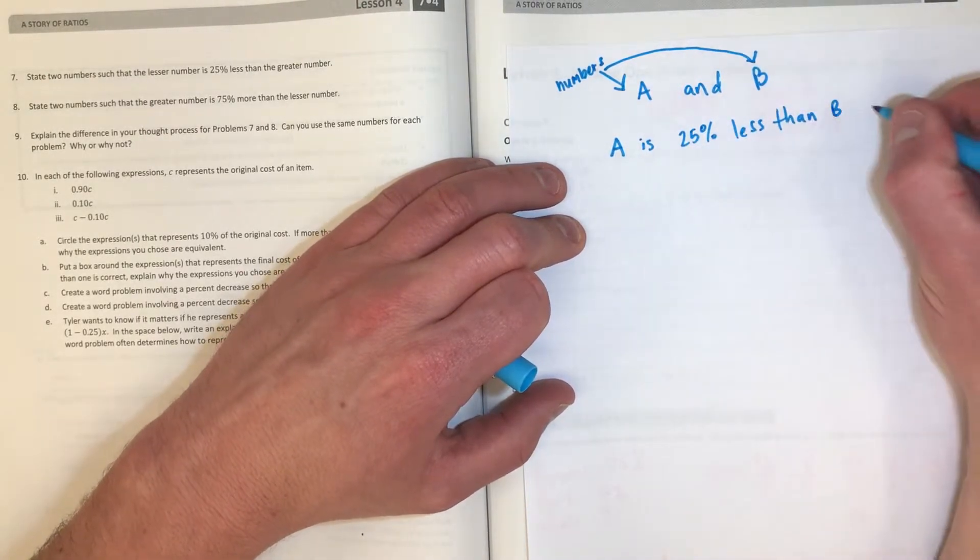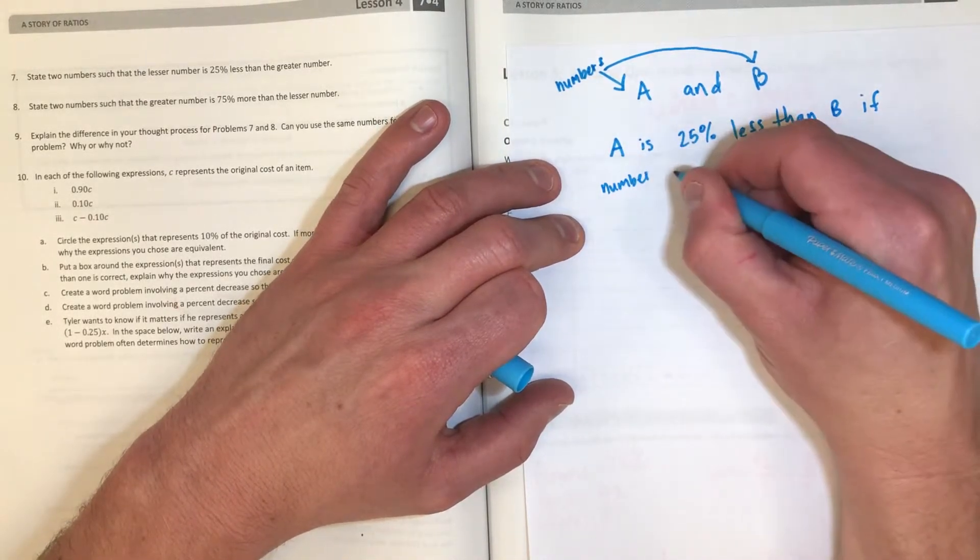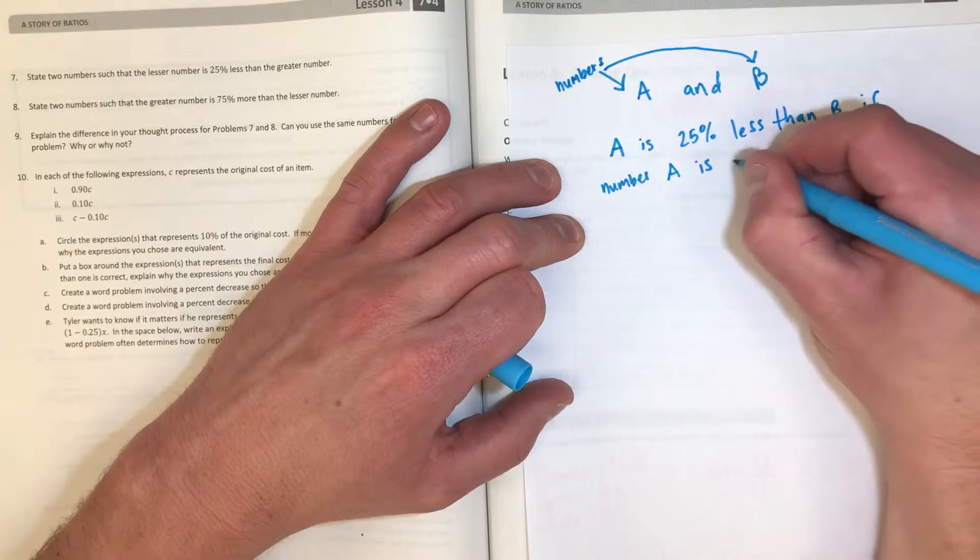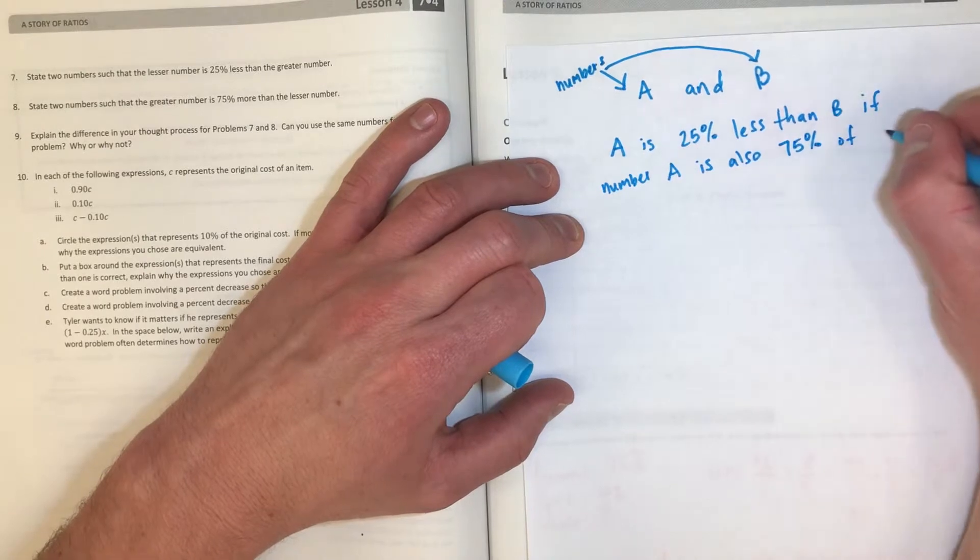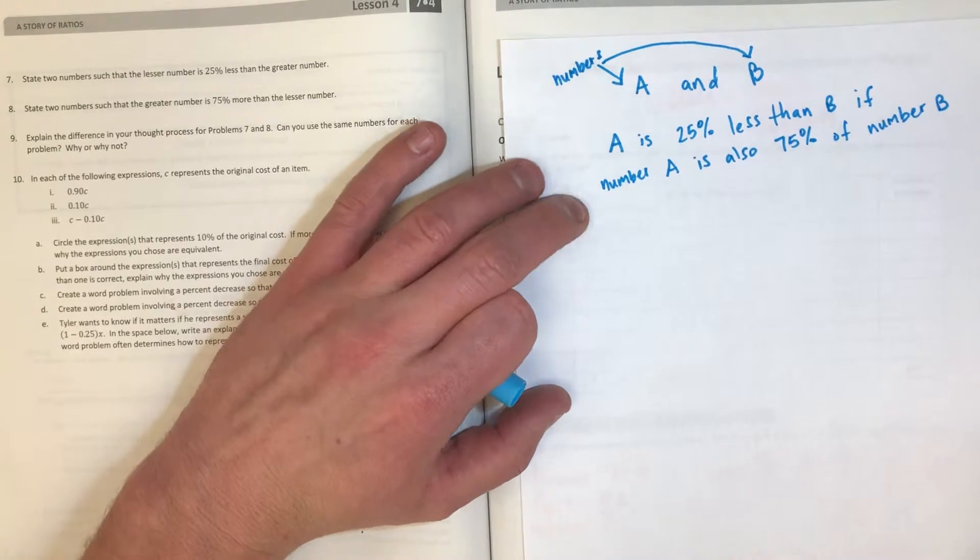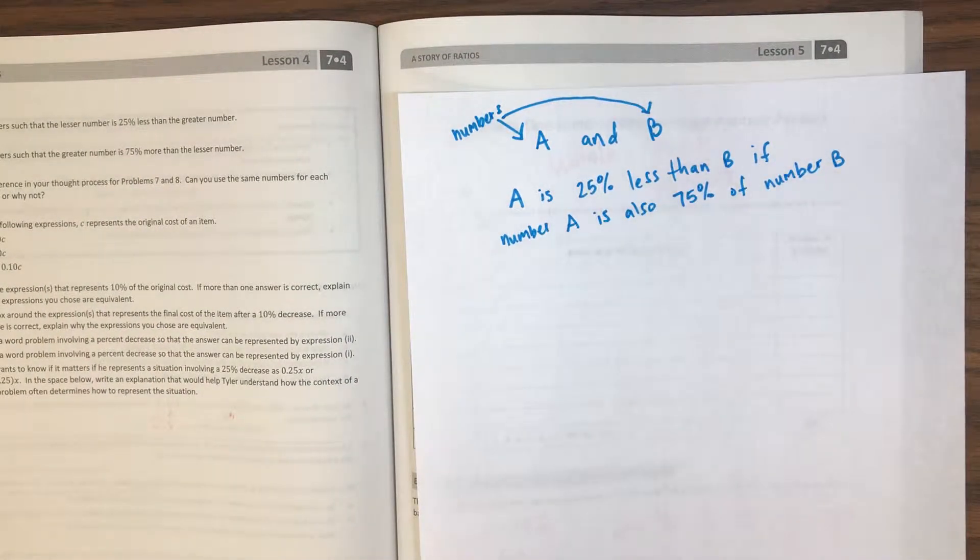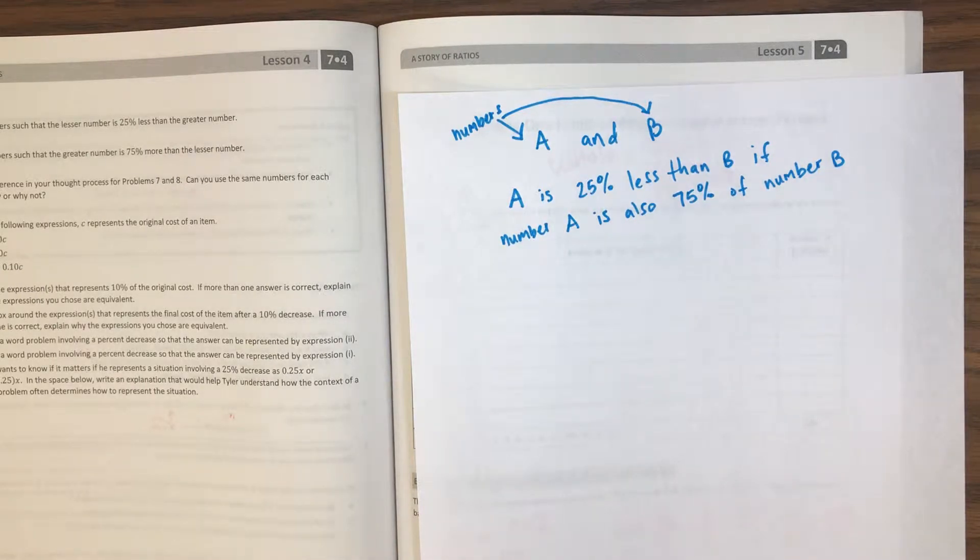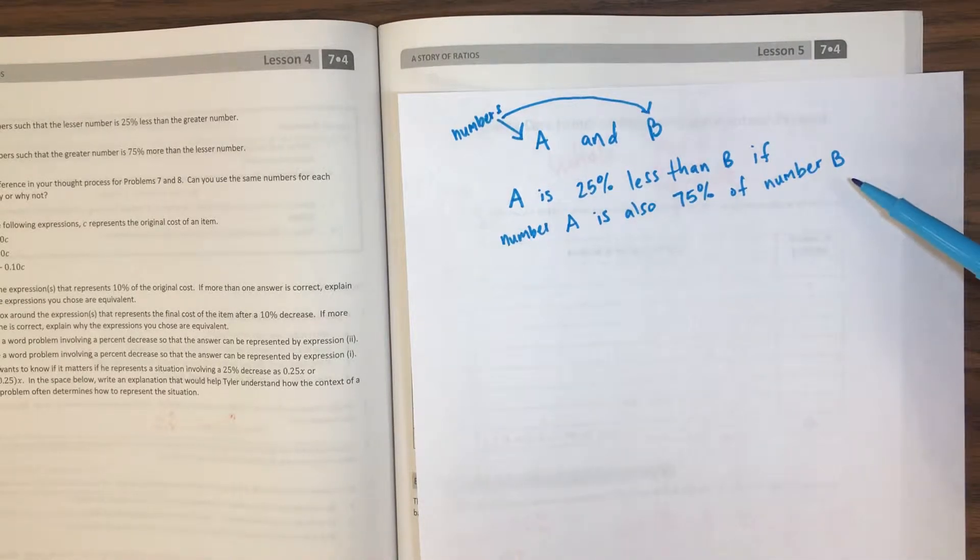Well, the number A, whatever that is, is 25% less than the number B if number A is also 75% of number B. We could pick a number and find what 25% of that number is and then subtract it from the number to do a 25% reduction, or we could just pick a number and then figure out what 75% of that number is. We get the same answer either way, so I think we're going to do it this way.